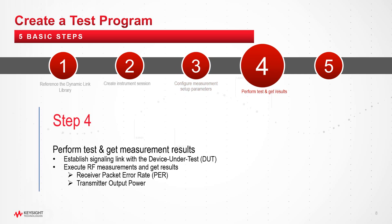At this step, you can start making the signaling link with the DUT and execute the RF measurements to get the result. In receiver PER measurement, the tester tracks the response messages from the DUT to request messages sent from the tester. Any missing response message or a message received with errors will be counted as a bad packet. In transmitter output power measurement, the tester captures and measures the average power of the transmitter signal of the DUT during the normal scanning process.